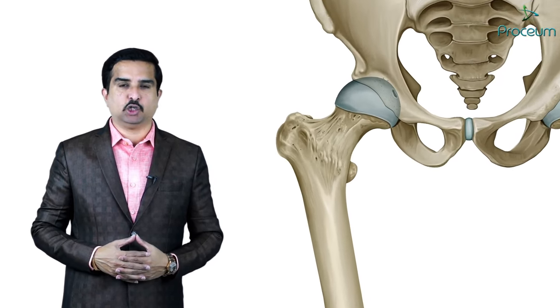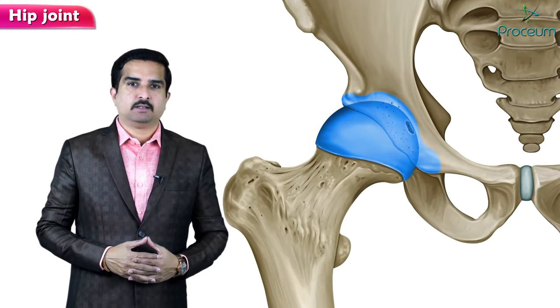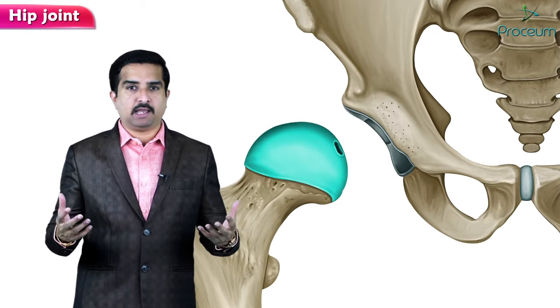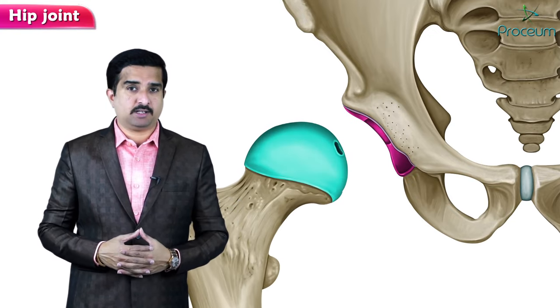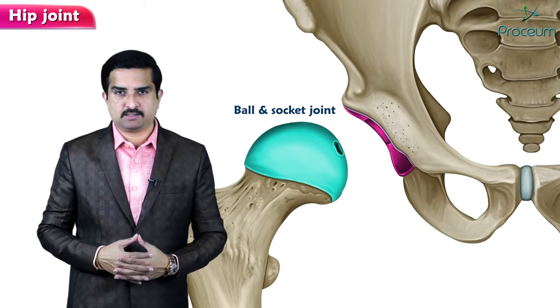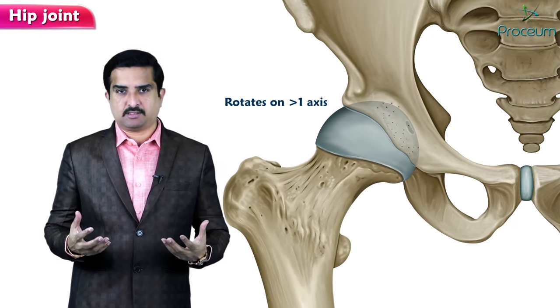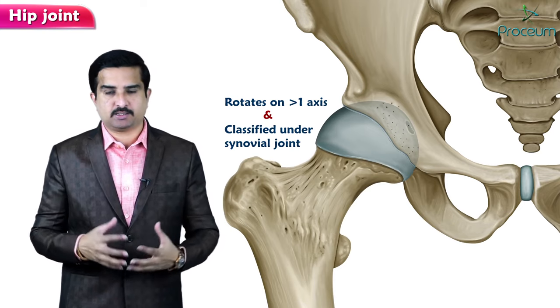Today in this session we are going to talk about one of the important joints of the lower limb, which is the hip joint. The hip joint is formed like a ball and socket, therefore it is called a ball-and-socket joint, which rotates on more than one axis and is classified under the synovial joint.